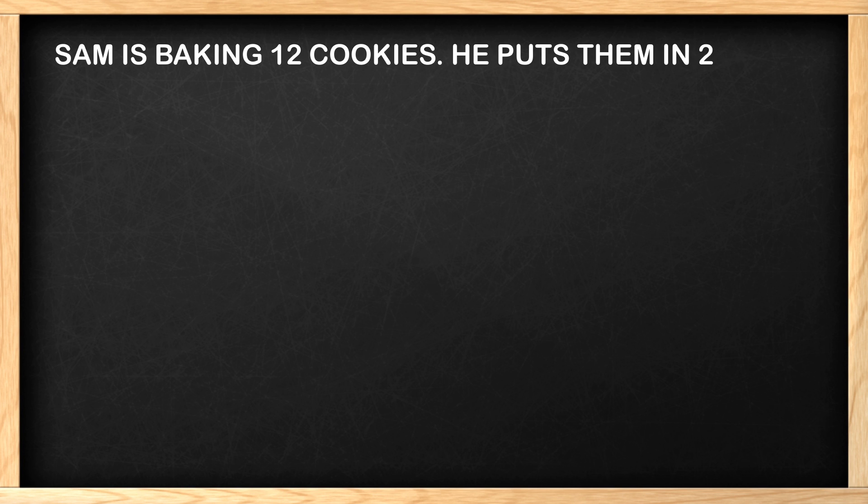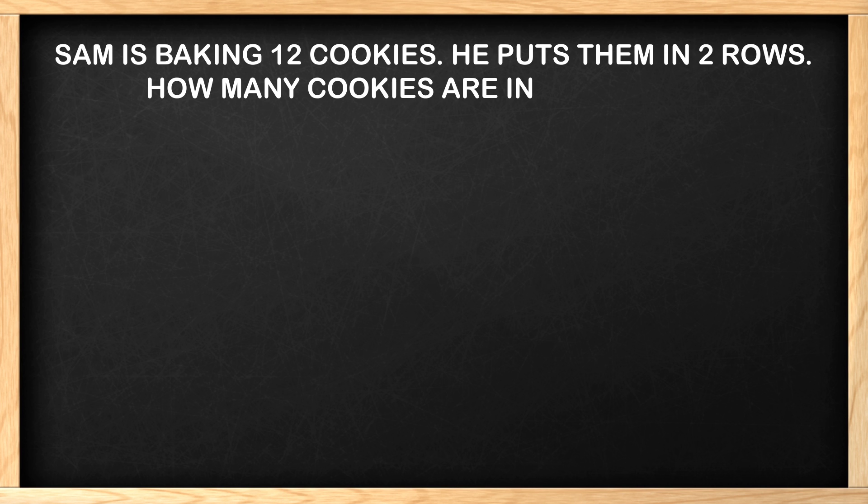The new problem says Sam is baking twelve cookies. He puts them in two rows. How many cookies are in each row? Before we jump in, let's not focus on if we are dividing or multiplying — we just want to first draw the problem. As you might have heard, the cookies got eaten from the first problem. We don't need the cookies to draw this, though. We can just use tally marks. We know there are twelve cookies in all, and they are divided into two rows. So let's draw the two rows where the tally marks go.